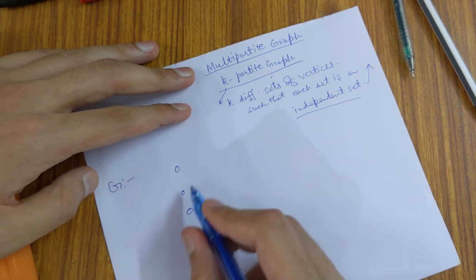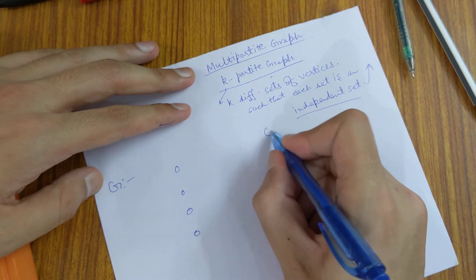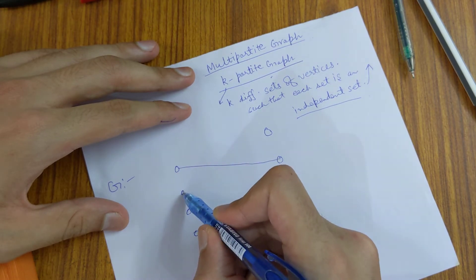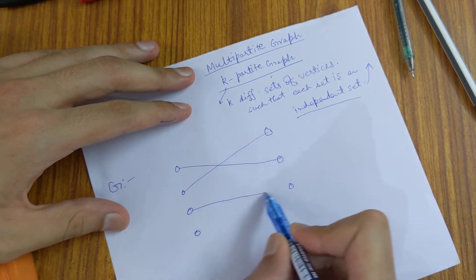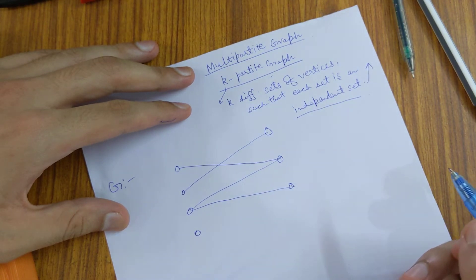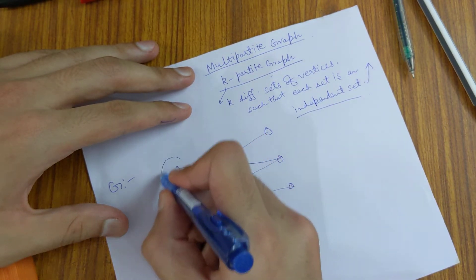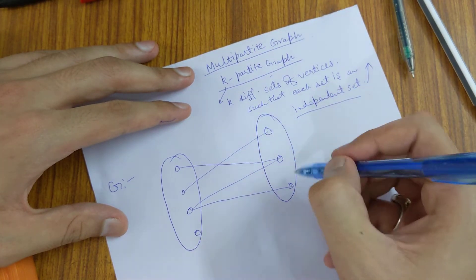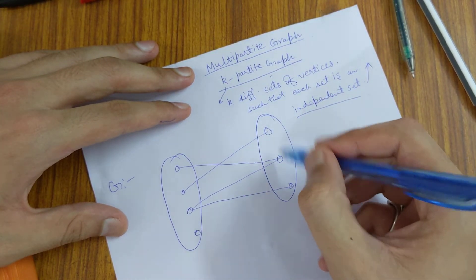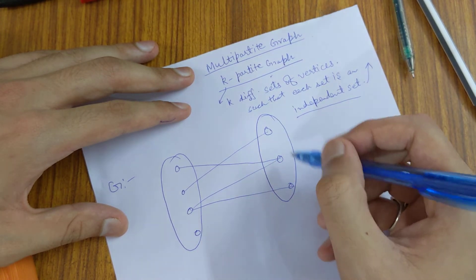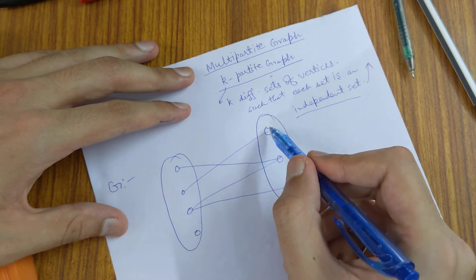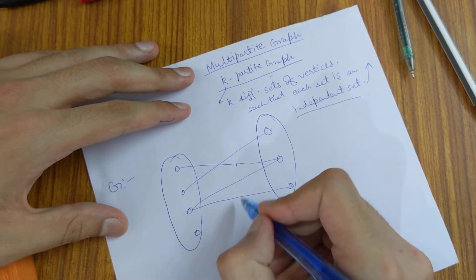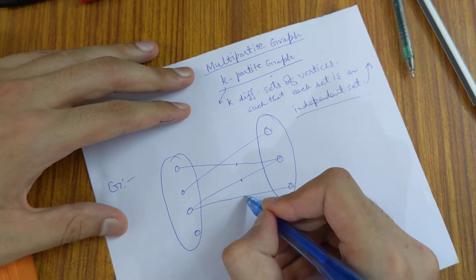For example, we consider a graph G. If we consider this particular graph, this is one independent set and this is another independent set because they have no edge in between themselves. They have edges from one set to another set, like this particular edge, this one, or maybe this one, or this one, or this one.